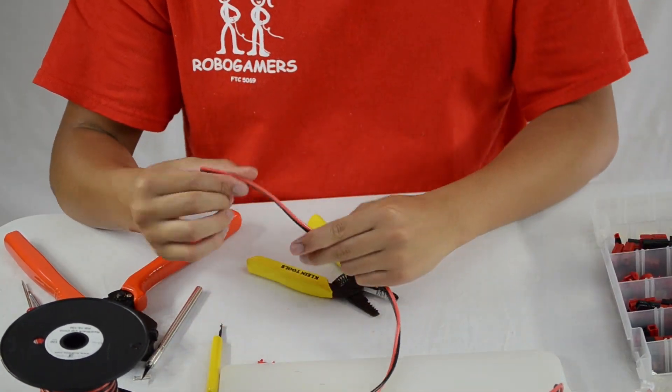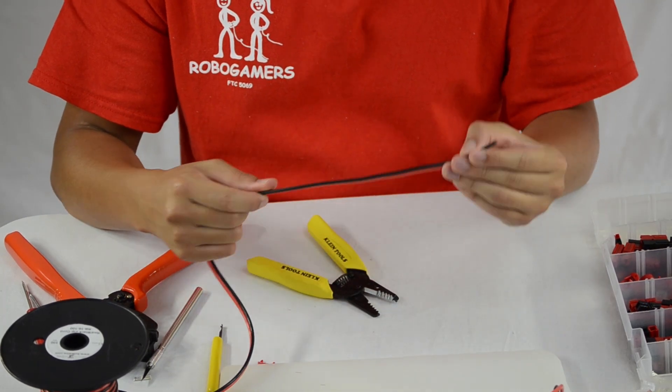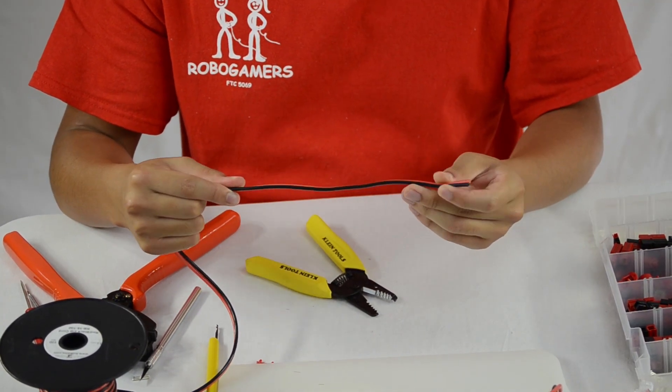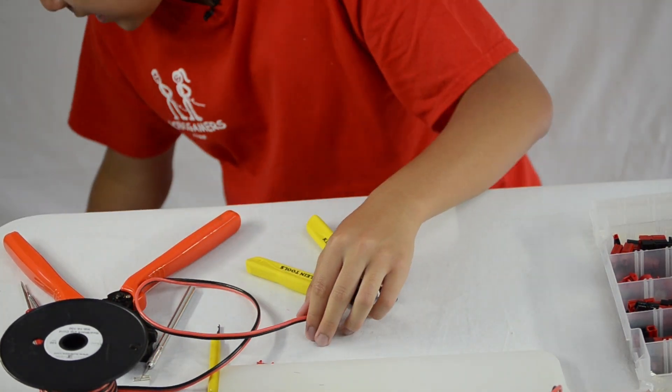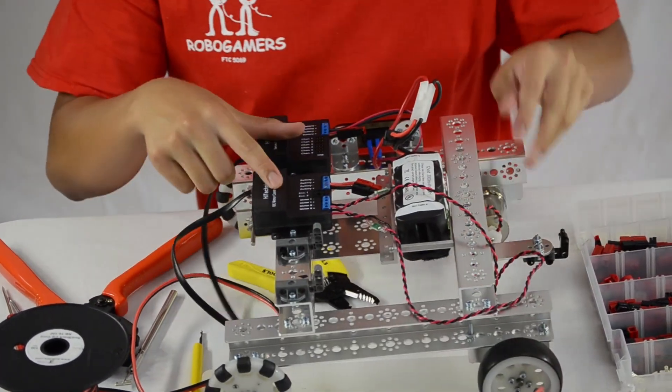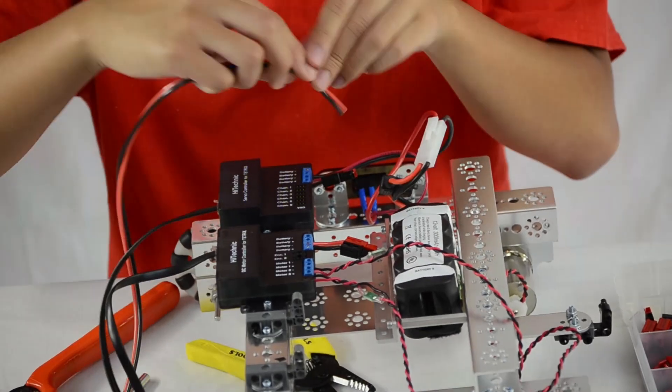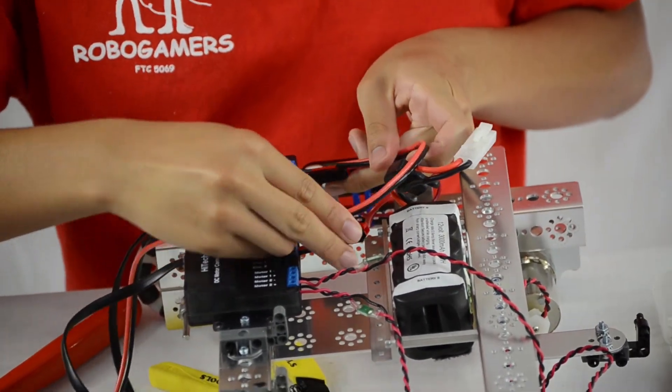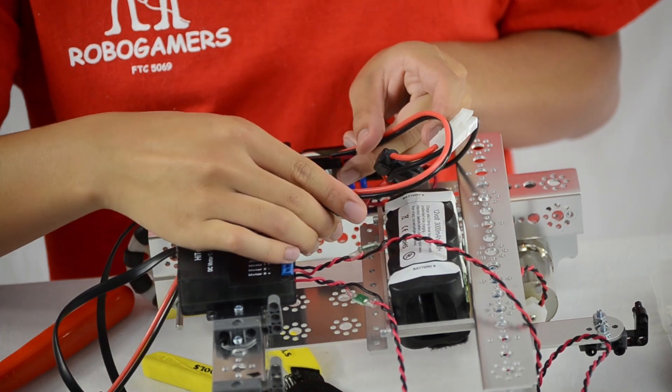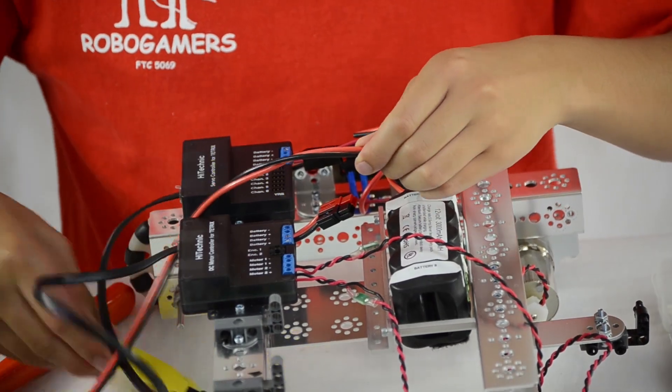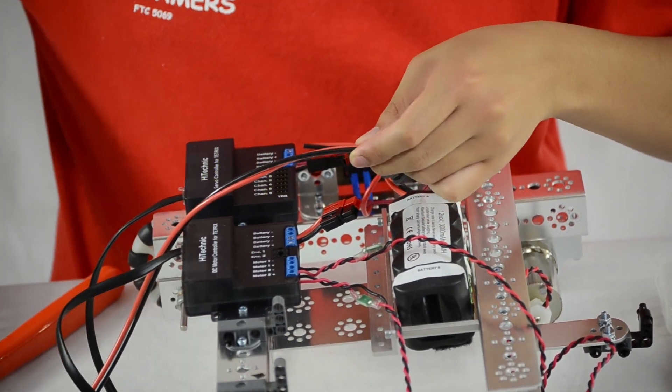What you're going to need is more red and black wire. The length of it depends on how far your controllers are from one another. And as we can see in the Ranger robot, they're relatively close and you just want to measure it out. So let's say that much. And you're also going to want to give yourself a little bit of room just in case you make mistakes. So once you've measured it out, cut it.